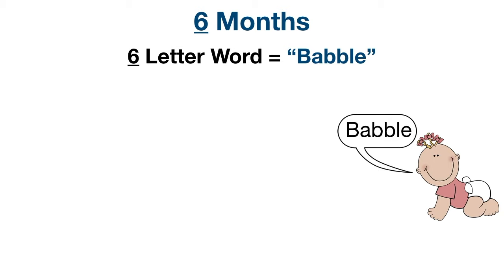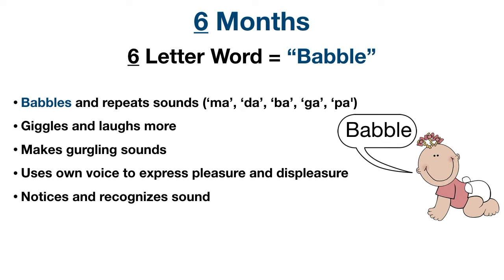For six months, we use the age to remember the milestone — the six-letter word 'babble.' By this age the infant starts to babble and repeat sounds. They may babble 'mama' or 'dada' without much meaning, because the repetitive consonant sounds they tend to produce first when babbling are B, D, G, M, P, and T.